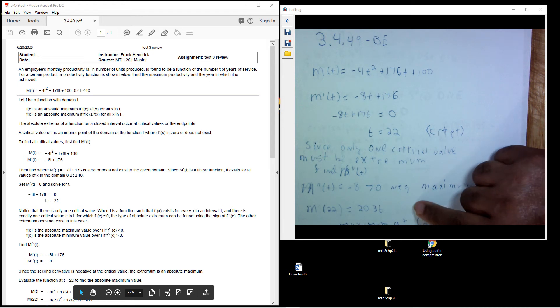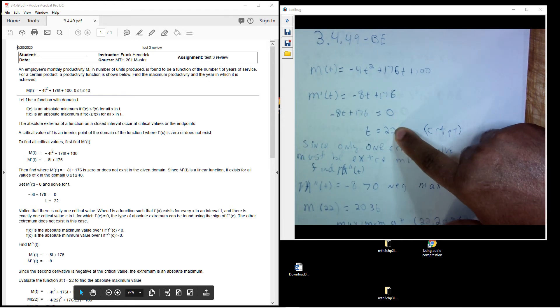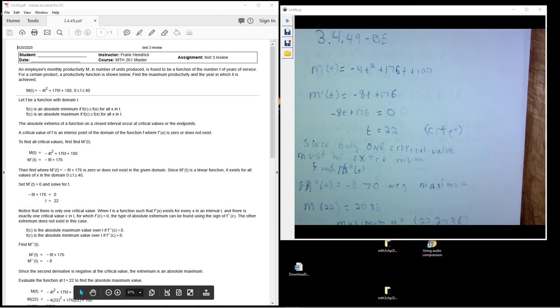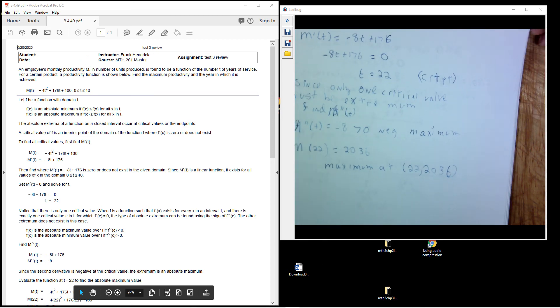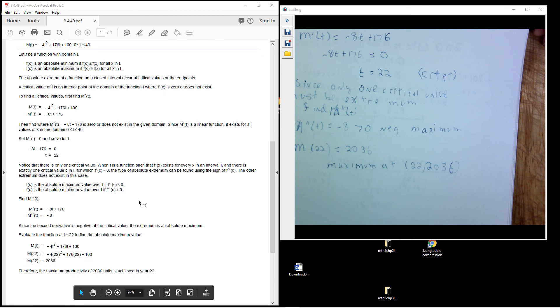So here we have a maximum when x is 22. And when I plug into the original function, the output at that year is 2036. Therefore, the maximum productivity of 2036 units is achieved in year 22.